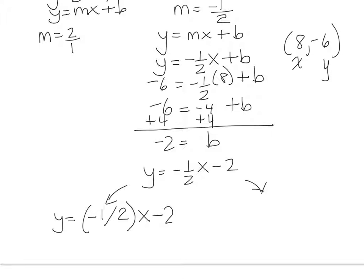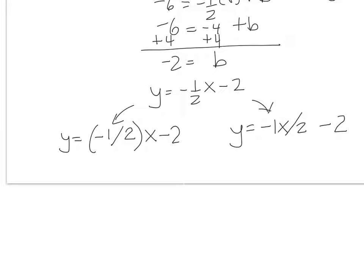Or you can write y equals negative, you can use the 1 if you want to, or you can drop it, negative 1 x forward slash 2 minus 2, that's an acceptable approach. But what you cannot do is write it this way. So you cannot write y equals negative 1 forward slash 2 x minus 2. The reason for that is, in order of operations, you're telling the computer that this x is in the denominator here, along with the 2.